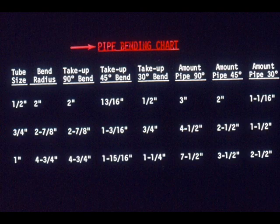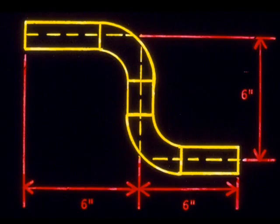You will use this exact same procedure for bending small pipe, no matter what degree the bend or size of pipe or tubing. Let's try one more sketch to show you a point we mentioned just a moment ago. This sketch shows a segment of tubing with two bends. All three legs are six inches long, each bend must be ninety degrees, and the tubing itself is three-eighths of an inch — the same as the last problem.